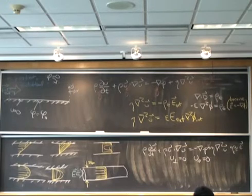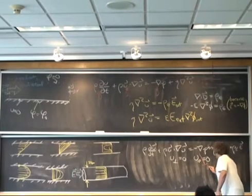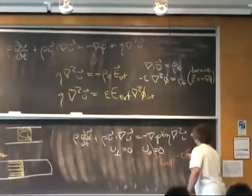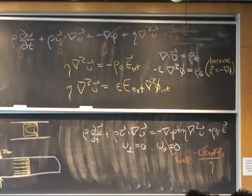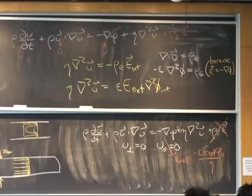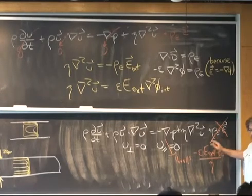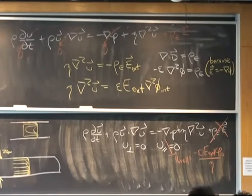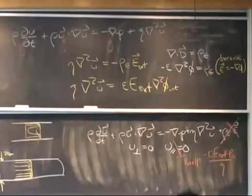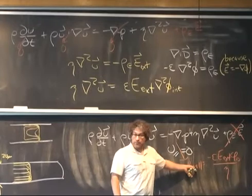Outside the electrical double layer, the only thing the flow sees is that there is an increased velocity relative to the wall associated with this charge. So all I'm going to do is say that the velocity at the wall is given by this expression, and then I'm going to ignore the double layer region entirely. The formulation in white gives me the correct answer everywhere in the flow. The formulation adjusted in red gives me the correct answer everywhere outside the electrical double layer — everywhere except the ten nanometers closest to the wall.